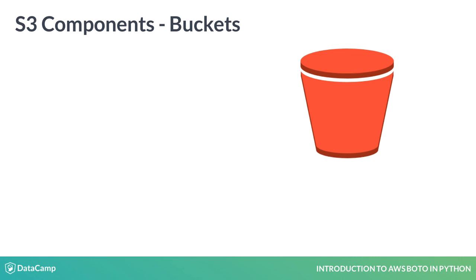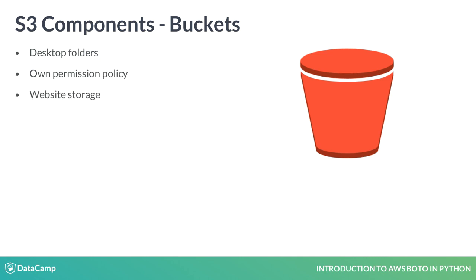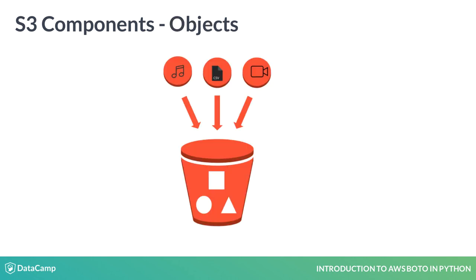The main components of S3 are buckets and objects. Buckets are like folders on our desktop, and objects are like files within those folders. But there's a lot of power hidden underneath. Buckets have their own permissions policies, they can be configured to act as folders for a static website, they can generate logs about their own activity and write them to a different bucket. The most important thing that buckets do? They contain objects.